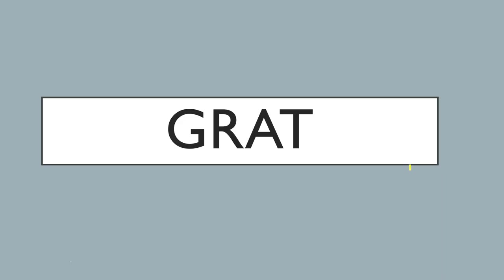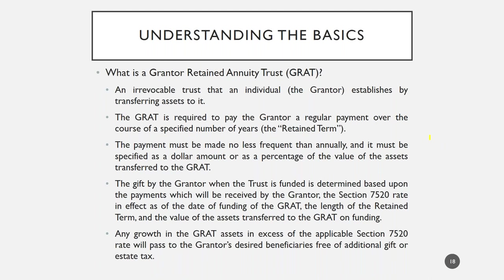Now we're going to turn to GRATs — Grantor Retained Annuity Trusts. With a GRAT, an individual transfers assets to a trust and retains the right to receive an annuity stream back from the trust for a certain term of years, called the retained term. The payment must be made no less frequently than annually, though quarterly or semi-annual payments are permissible if dictated by the trust terms. Similar to a QPRT, the IRS has tables and calculations to value the retained interest being retained by the grantor.